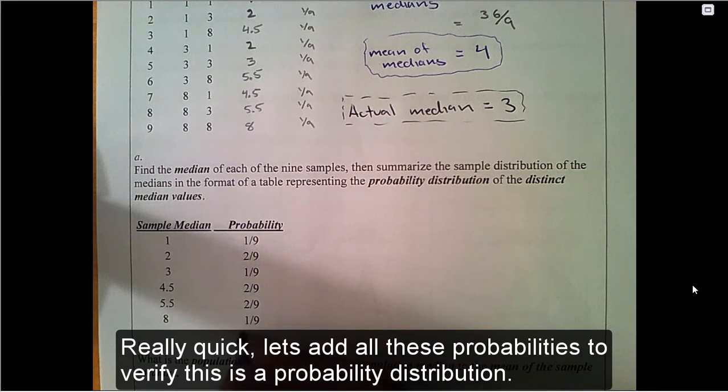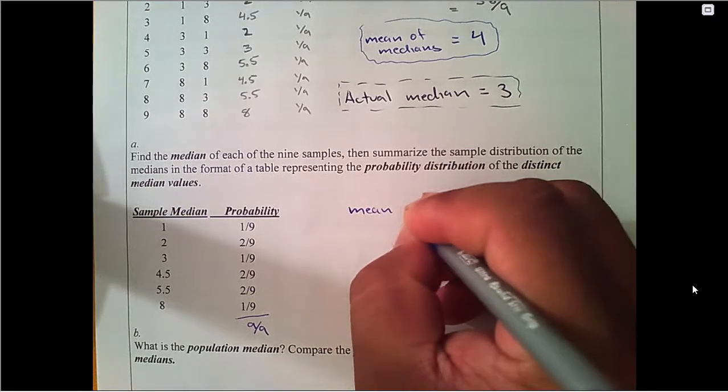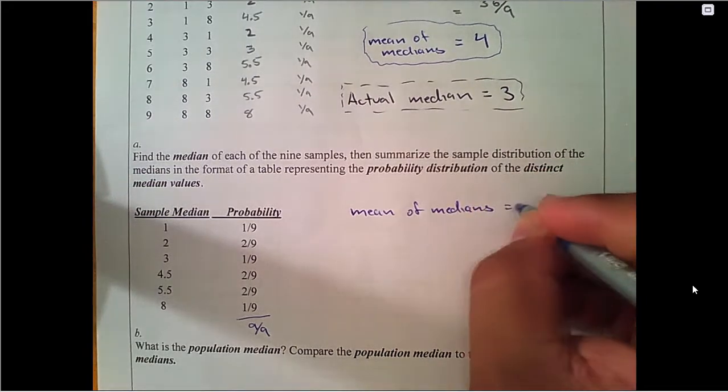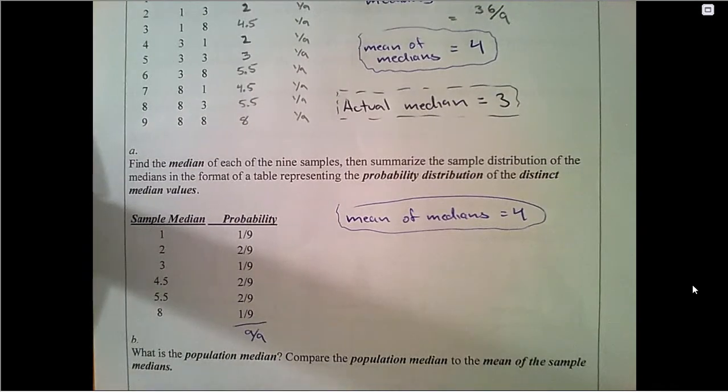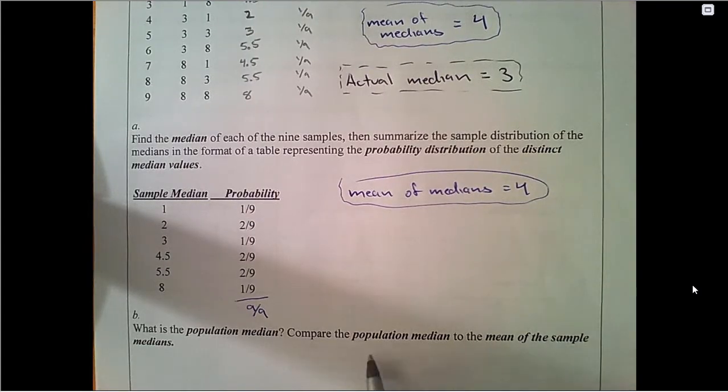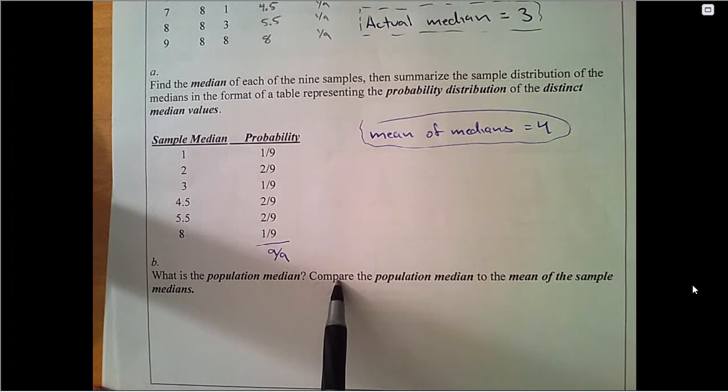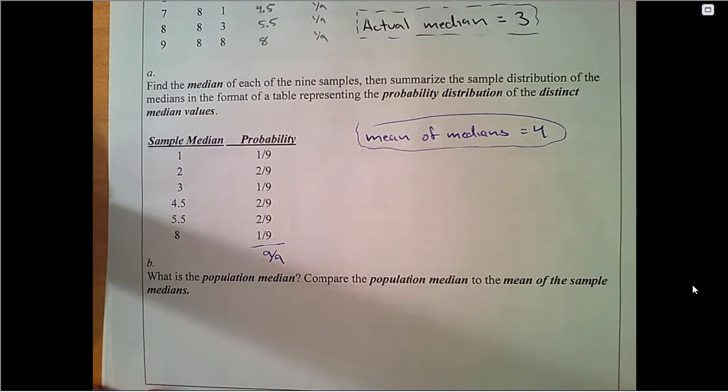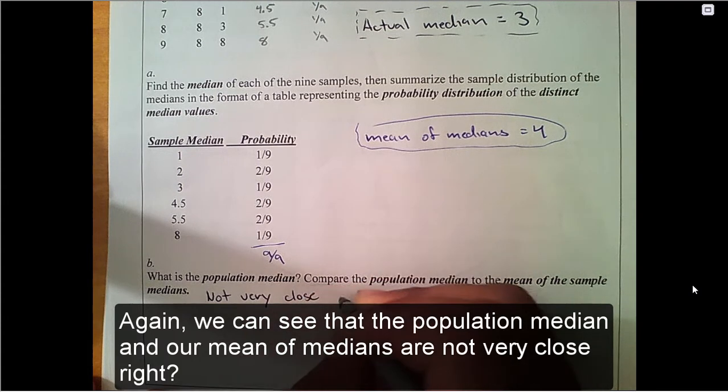Really quick, let's add all these probabilities to verify this is a probability distribution. Again, we can see that the population median and our mean of medians are not very close, right?